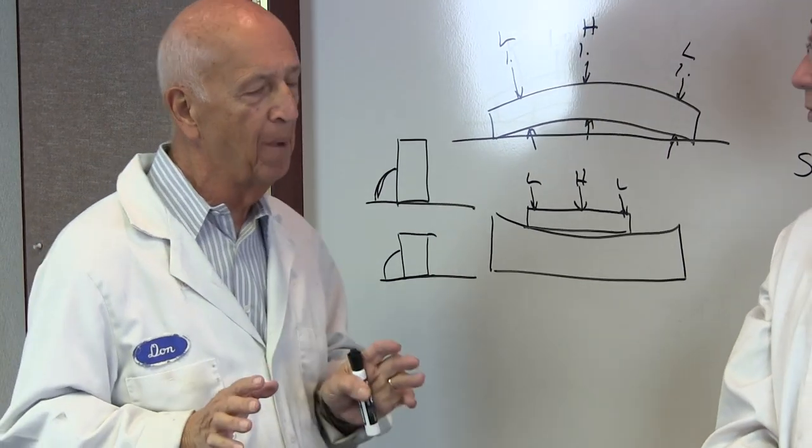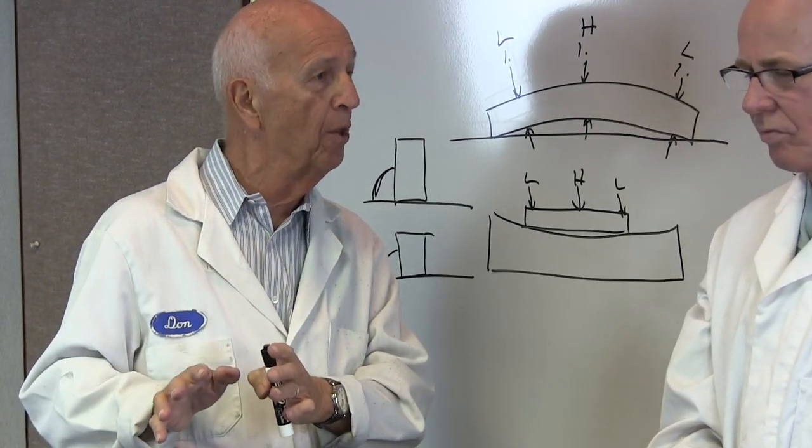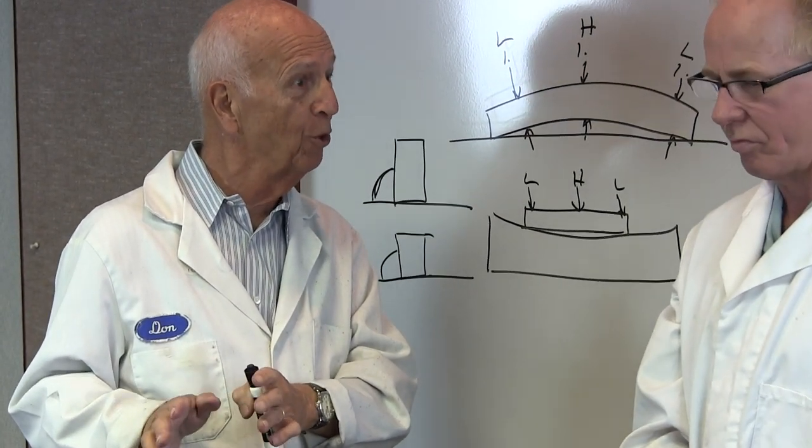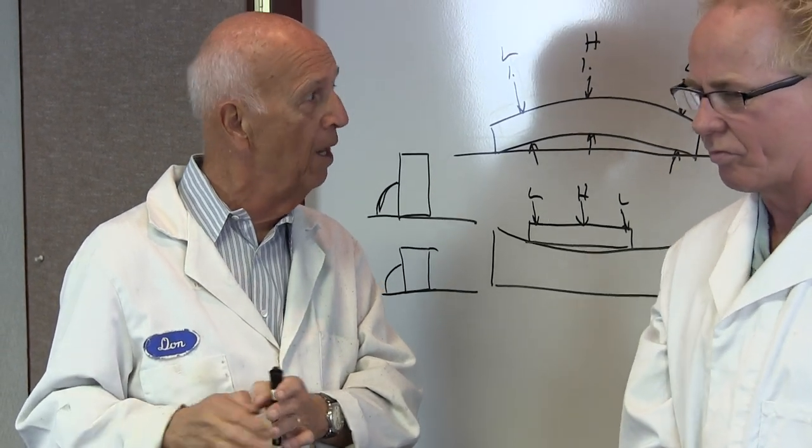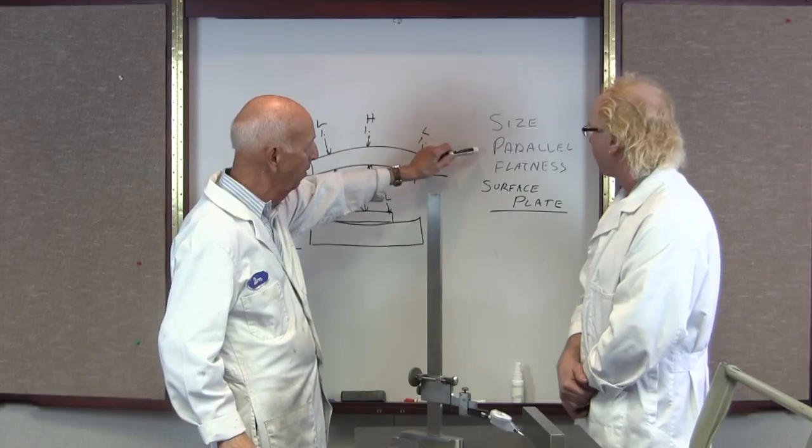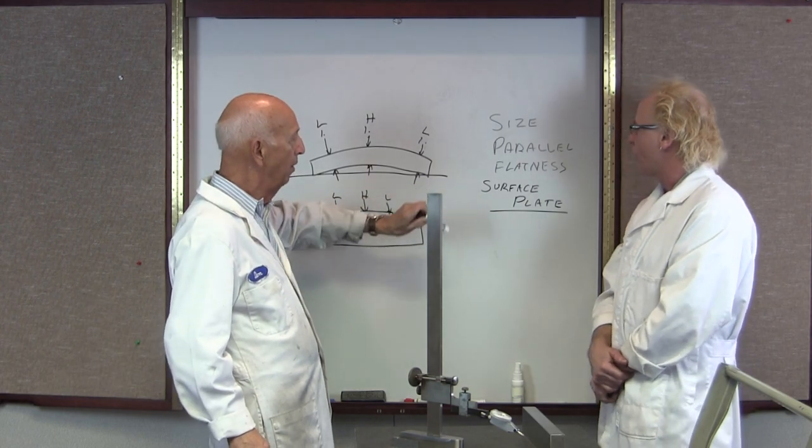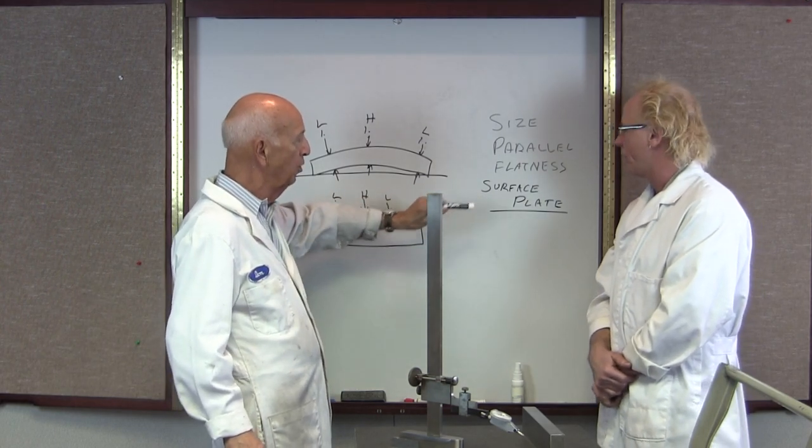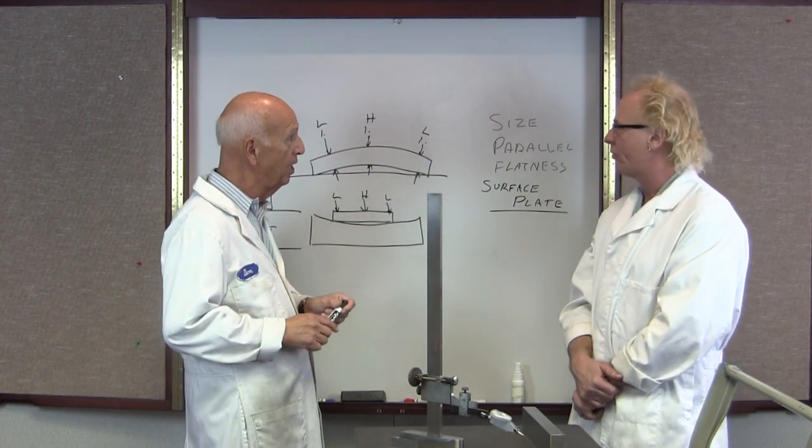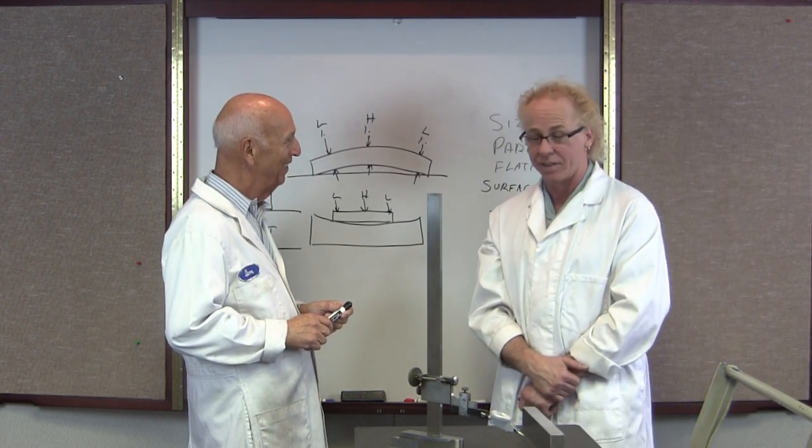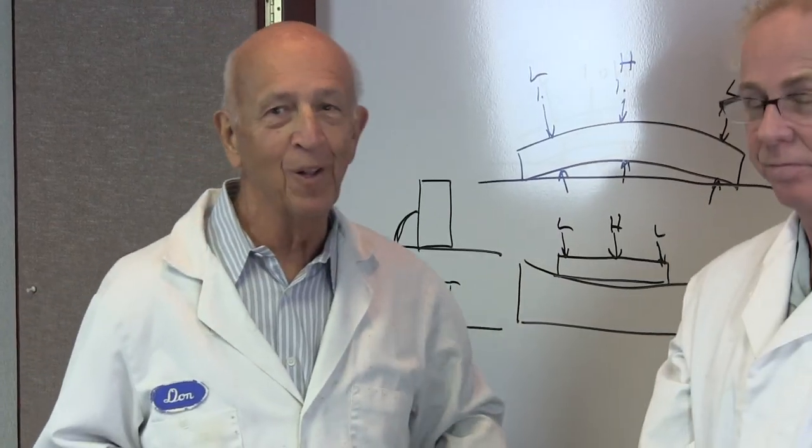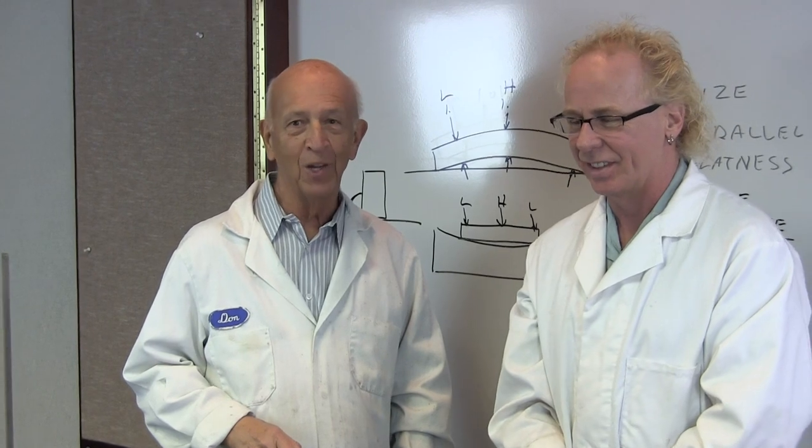So it's critical. If you're dealing with thousandths, it's not that bad, but when you're in this world, what I call the micro world, and you're dealing with a tenth or two, it's really really important that we understand all of these things: size, parallelism, flatness, and perpendicular. And our surface plate—the surface plate is a key ingredient in the equation. Yes it is.